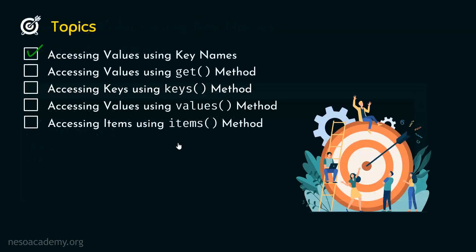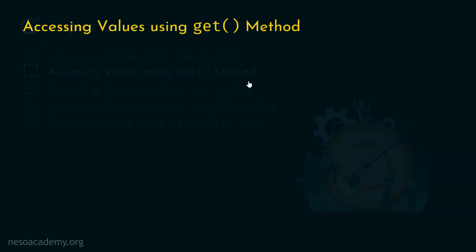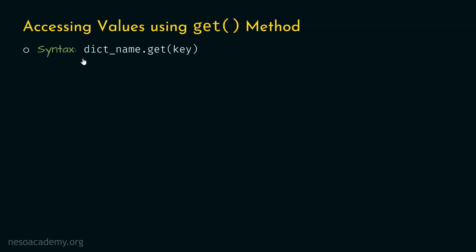Now let's move on to the next topic: accessing values using the get method. We can use the get method to access values of a dictionary. For this, we need to follow the syntax: first type the name of the dictionary, then dot, then get, and within parentheses, specify the name of the key whose value we want to access.